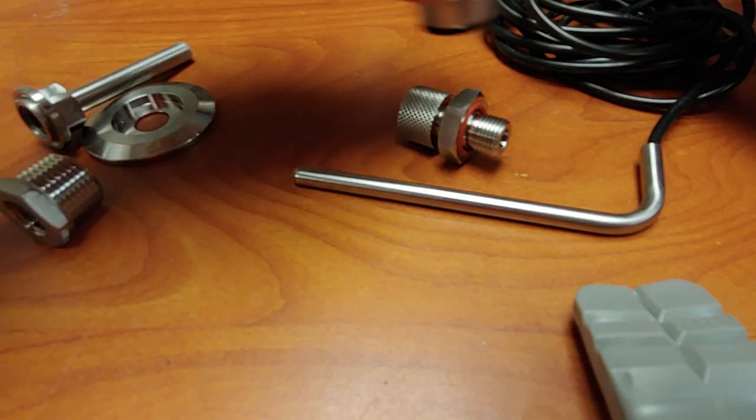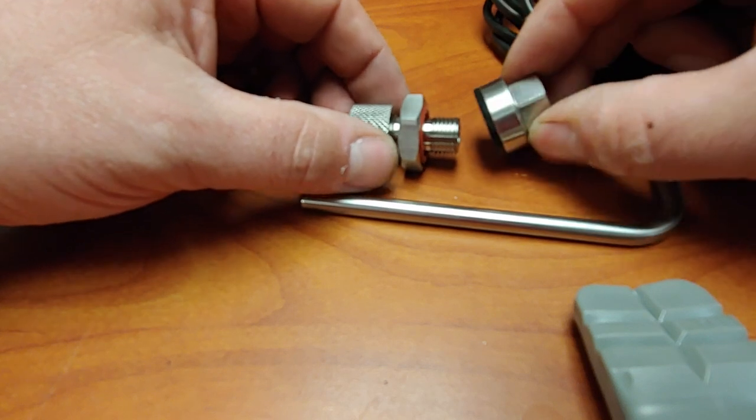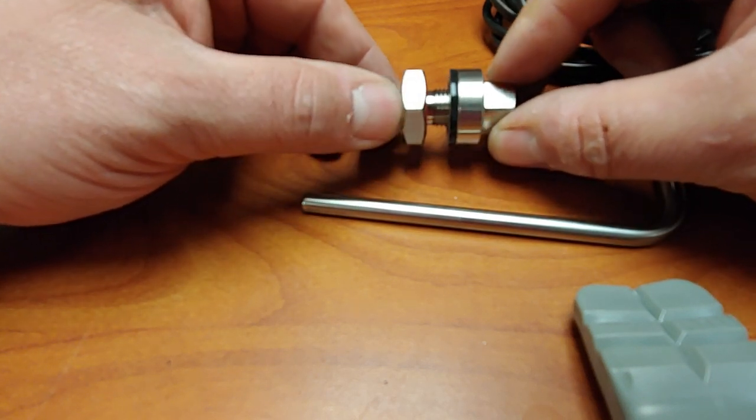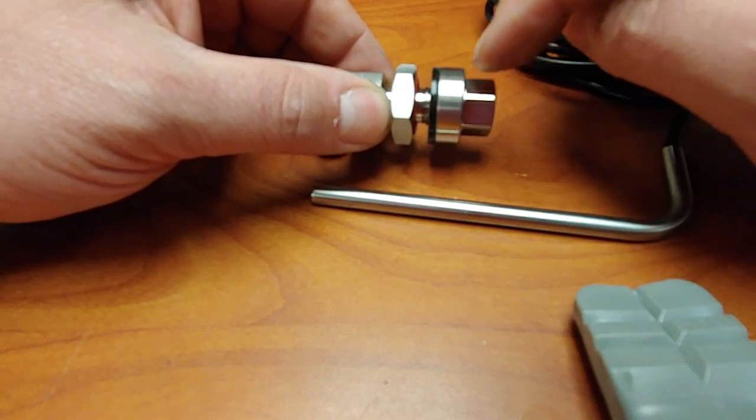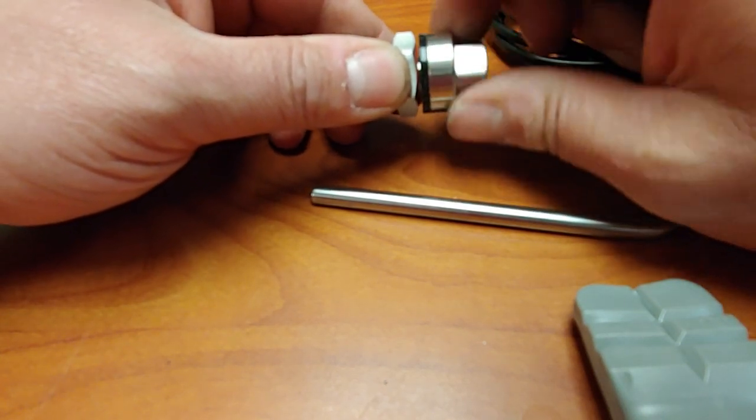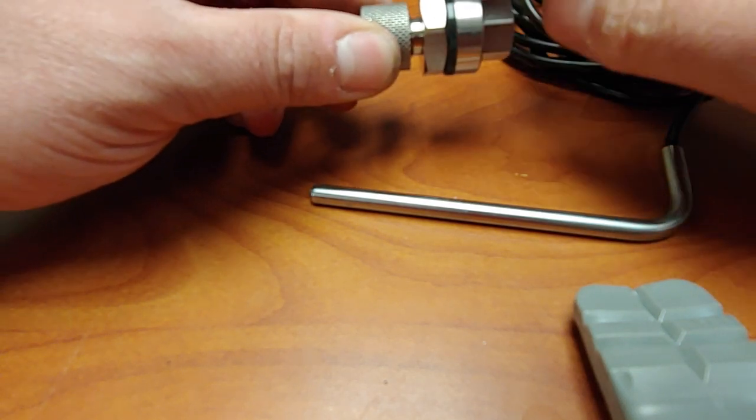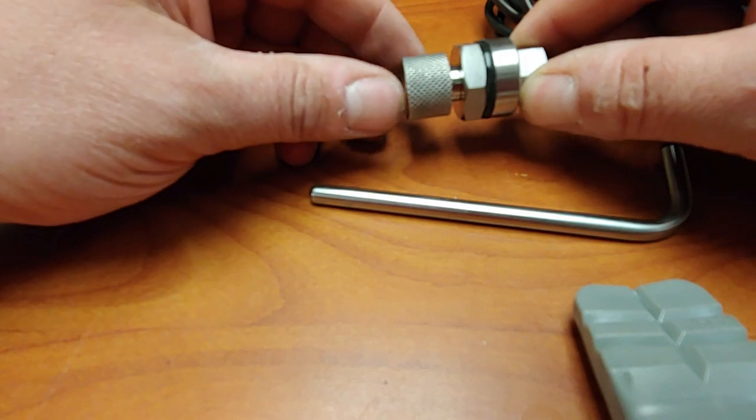This is just a weldless bulkhead. You drill a half inch hole in your kettle and put it through the wall of the kettle. This part goes on the inside and this part goes outside, so you just tighten that up. It's got gaskets and seals very well. There's no problems with leakage unless you grossly over drill the hole larger than a half inch.